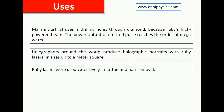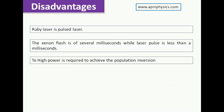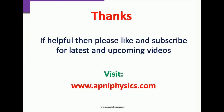The main uses of the ruby laser include: drilling sharp holes in diamonds and other industrial applications, since the output is in the megawatt range; producing holographic portraits up to one meter square; and tattoo removal and hair removal. The main disadvantage of the ruby laser is that it is a pulsed laser — the output comes in pulses, not as a continuous wave.